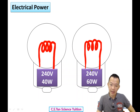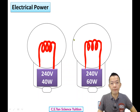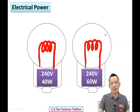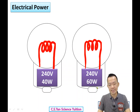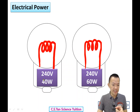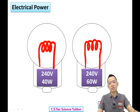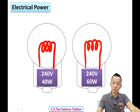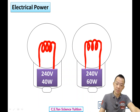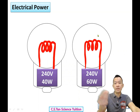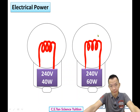Between these two light bulbs, which is more powerful and brighter? It must be the 60-watt one. In one second, it uses 60 joules of electrical energy — compared to only 40. So the 60-watt bulb converts electrical energy to light faster, making it brighter — but the electricity bill will also be higher.